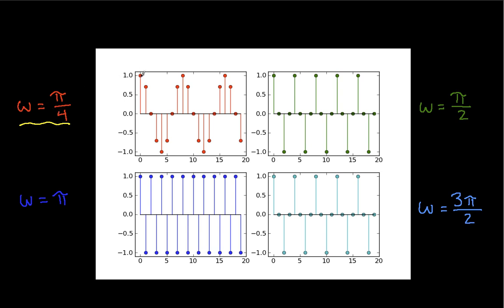So the red waveform here is a frequency of pi over 4. And you can see that it takes 1, 2, 3, 4, 5, 6, 7, 8 samples to give you a complete cycle of the cosine waveform.